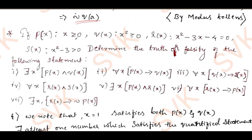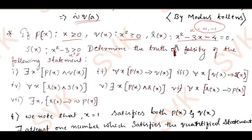Moving on to question number 2c. p(x) is defined as x ≥ 0 (x is positive), q(x) is defined as x² ≥ 0, r(x) is defined as x² − 3x − 4 = 0. Solving this expression, x equals 4 and −1, so r(x) is satisfied only for x = 4 and x = −1. s(x) is satisfied for all x where x² ≥ 3.